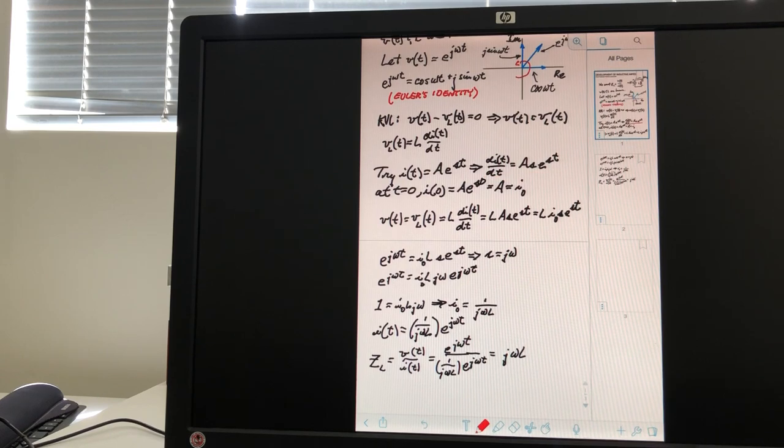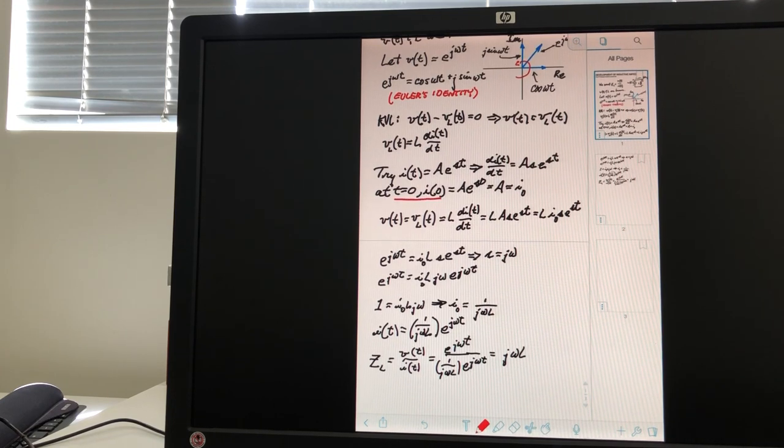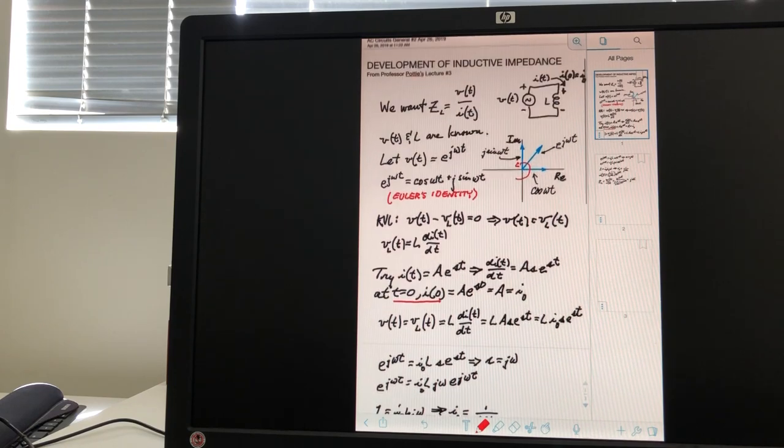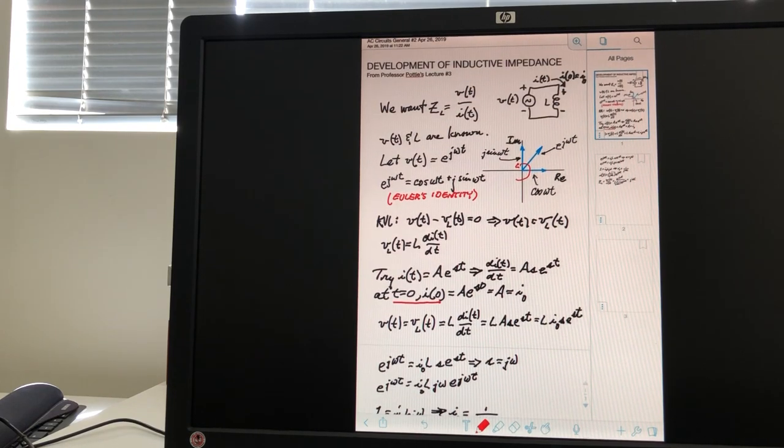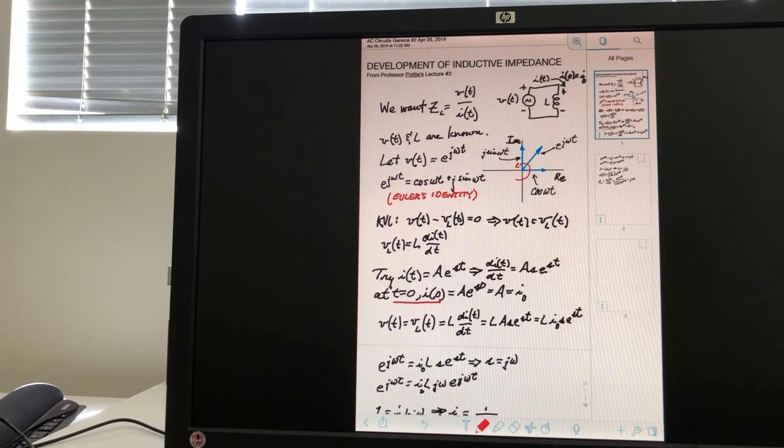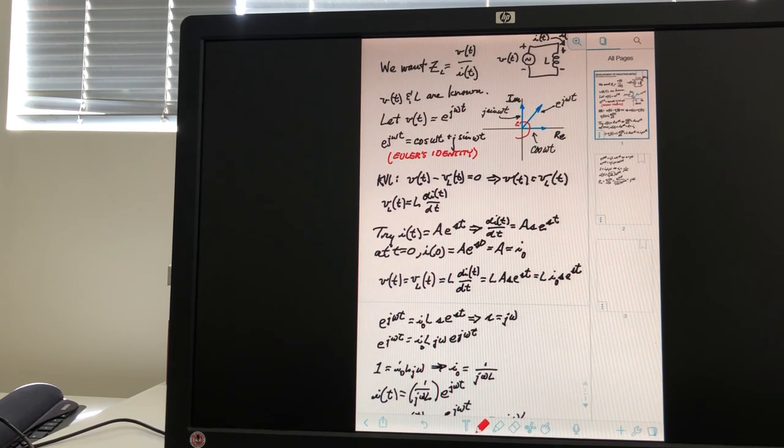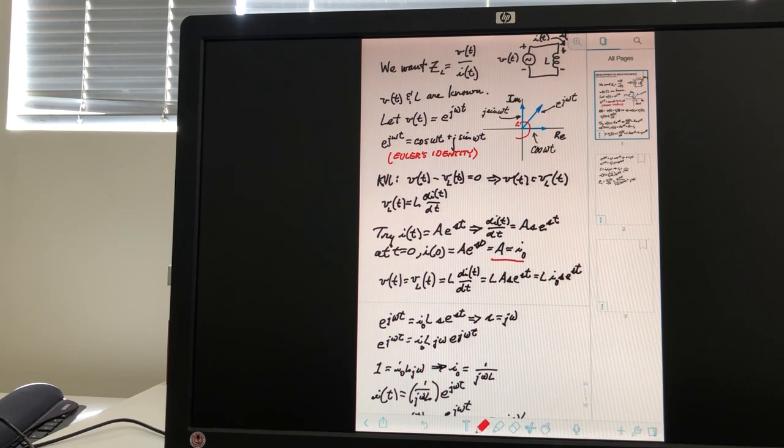And so, at T equals zero, right here, then I of zero is equal to I sub zero, if you remember, we declared that up here at the beginning. So, as the initial condition. And so, we can now say that A is equal to I zero right here.